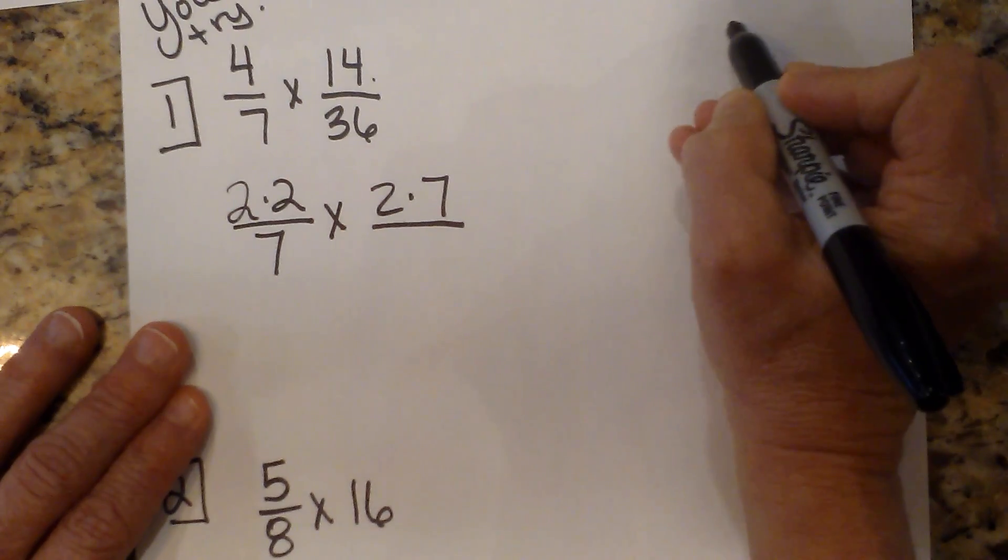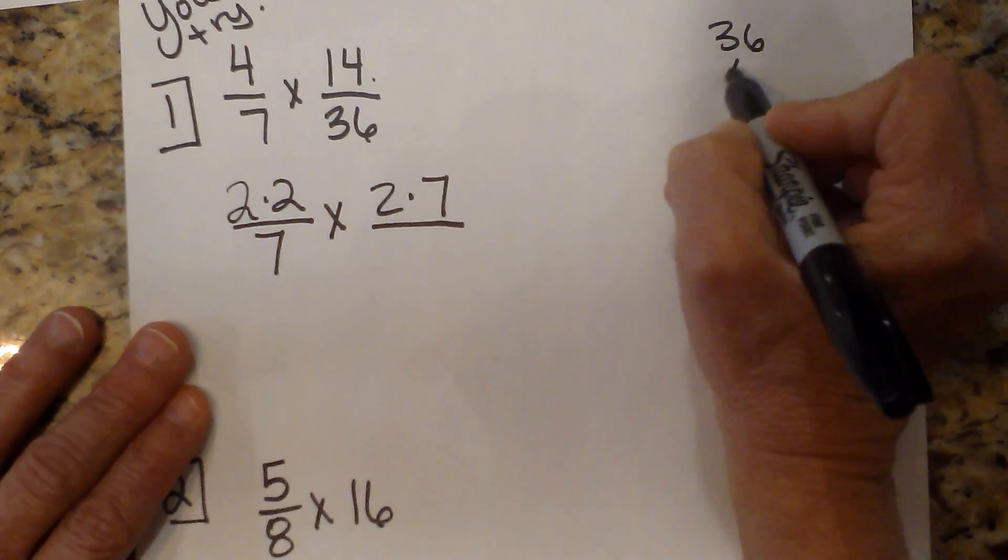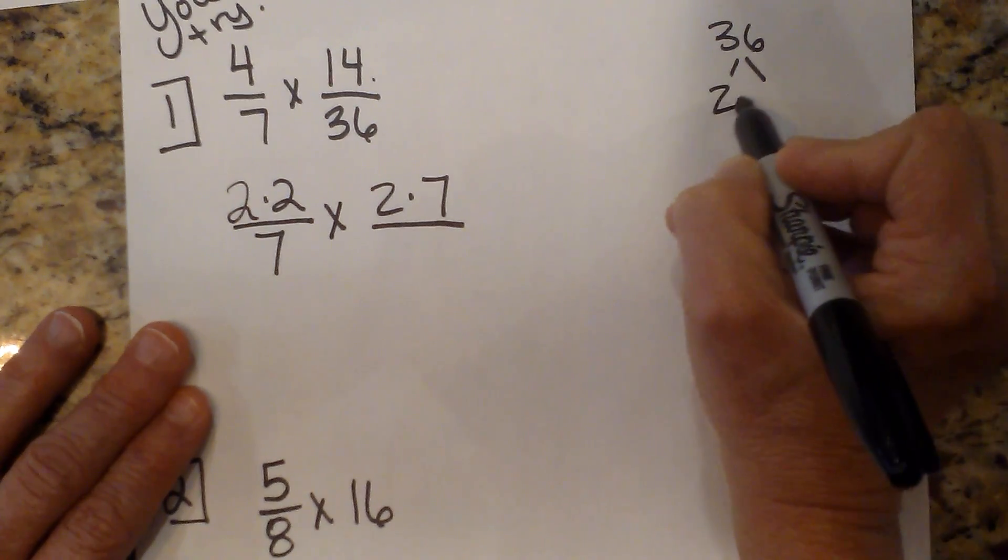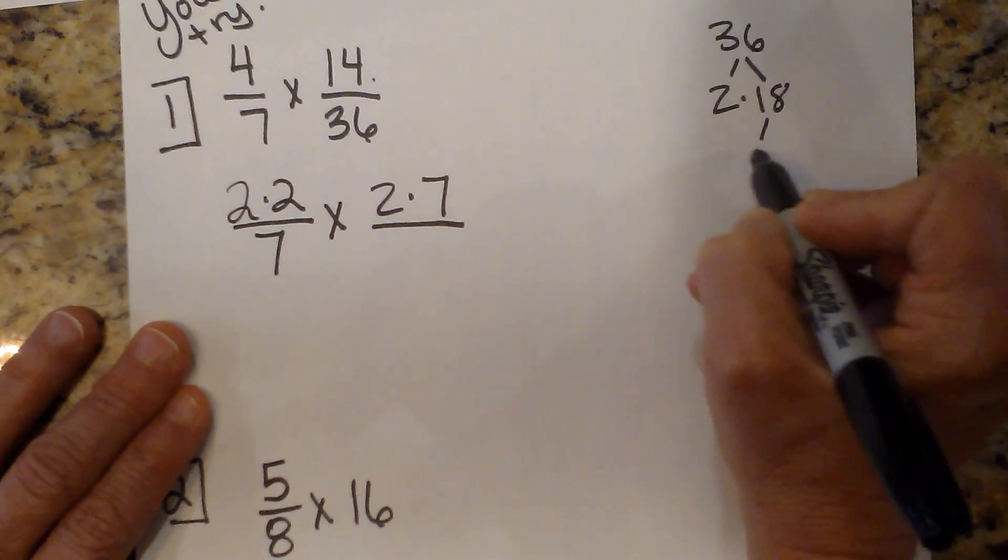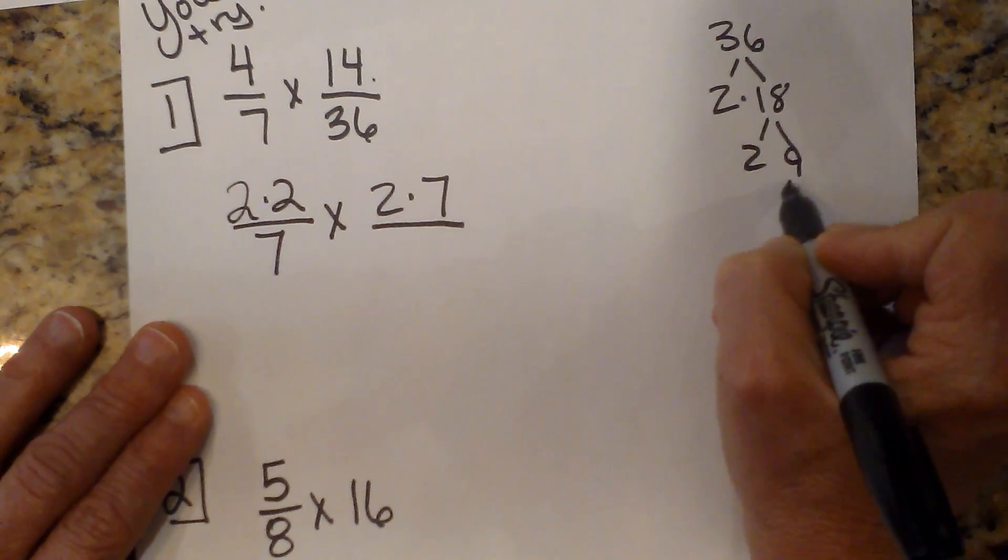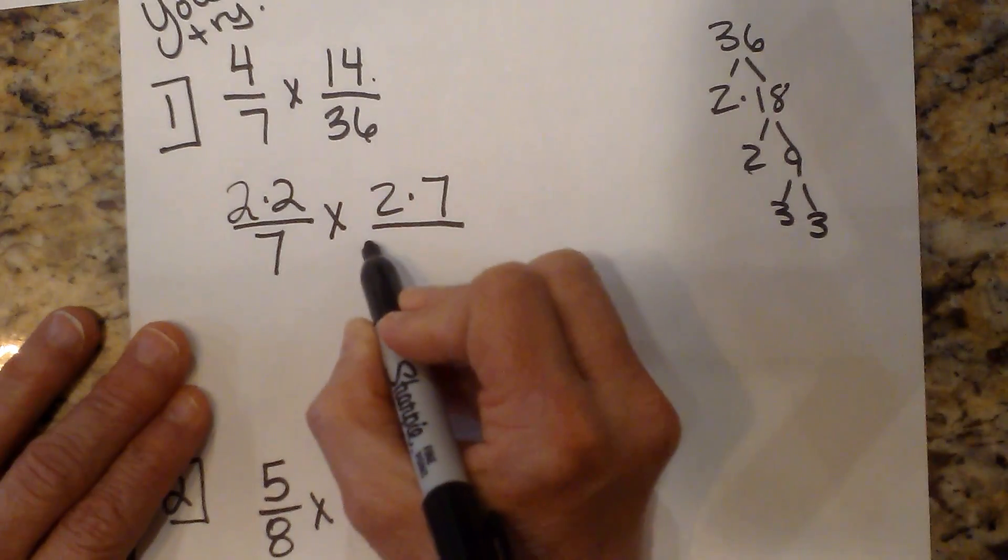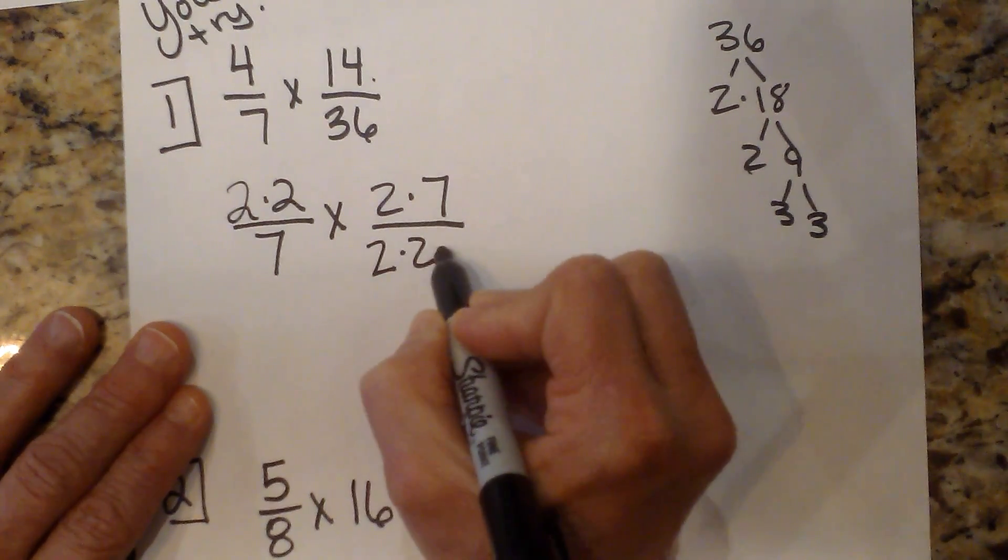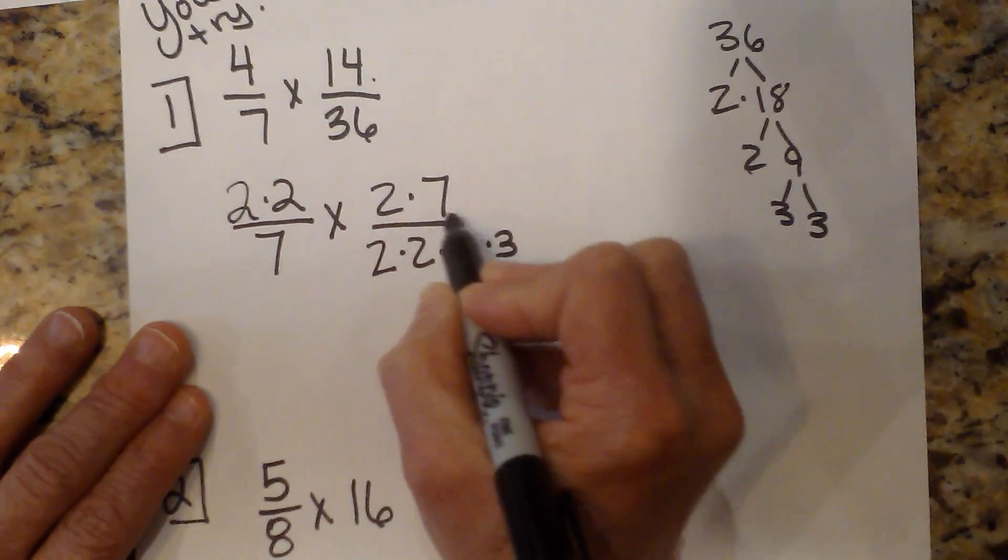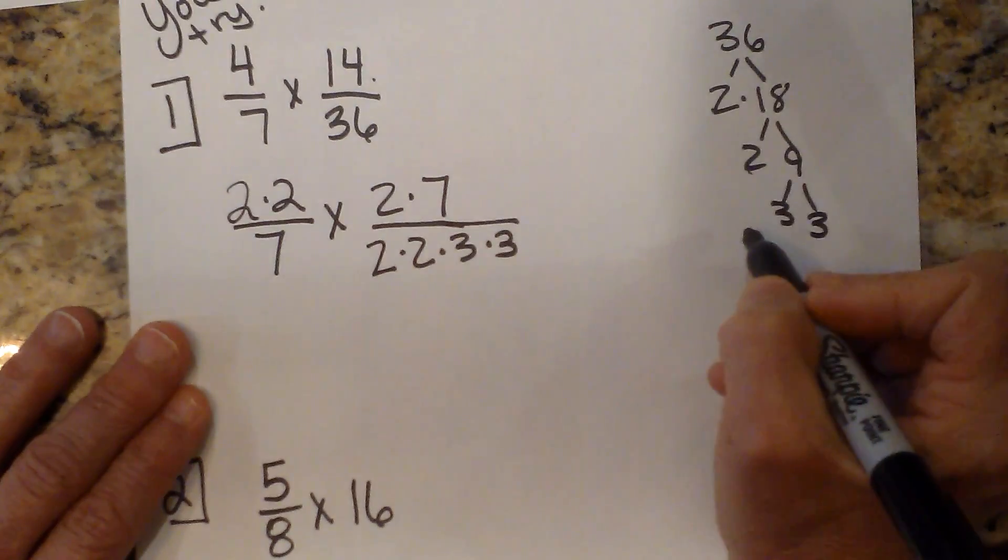And 36—that one's a little harder. So I'm going to go over here and make a little factor tree. 2 times 18, and then 2 times 9, and then 3 times 3. So here are my prime factors: I have 2 times 2 times 3 times 3. There we go. So sometimes you have to do that factor tree.